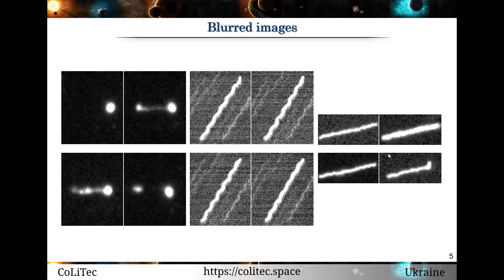Examples of blurry images of objects in digital frames are shown in this slide. The main reasons for such blurring are atmospheric disturbance, loss of journal tracking, inaccuracies in satellite tracking, or even wind gusts.